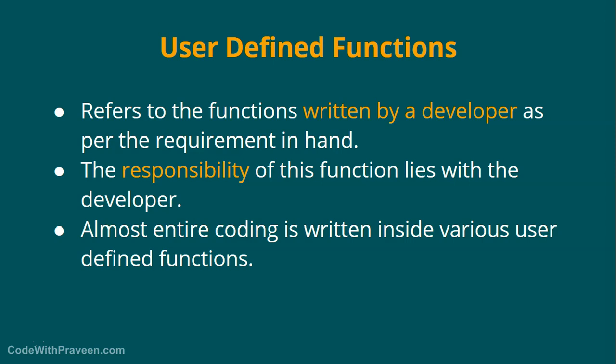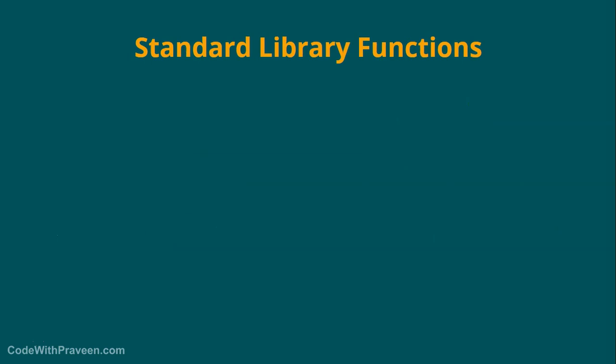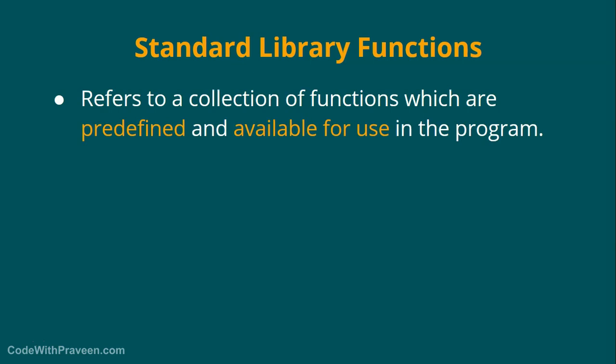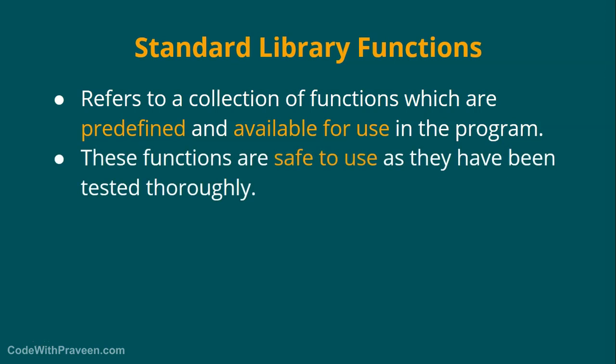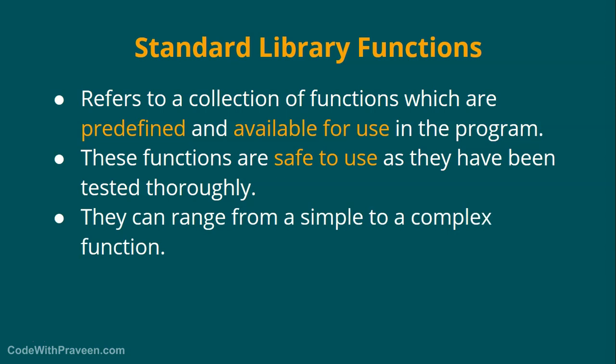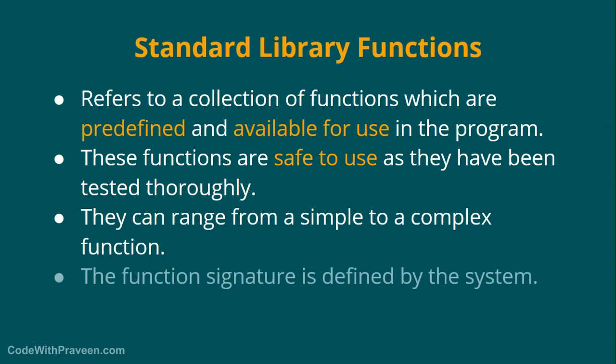The second type of functions are standard library functions, which refers to a collection of functions that are predefined and available for use in the program. These functions have been already defined as per a specific function signature and are available ready-made by the programming language. They are safe to use because they have been tested thoroughly. They can range from a simple function to very complex ones. Note that even third-party libraries can be considered library functions, since they are defined by the system or a third party — all of these are generally referred to as standard library functions.